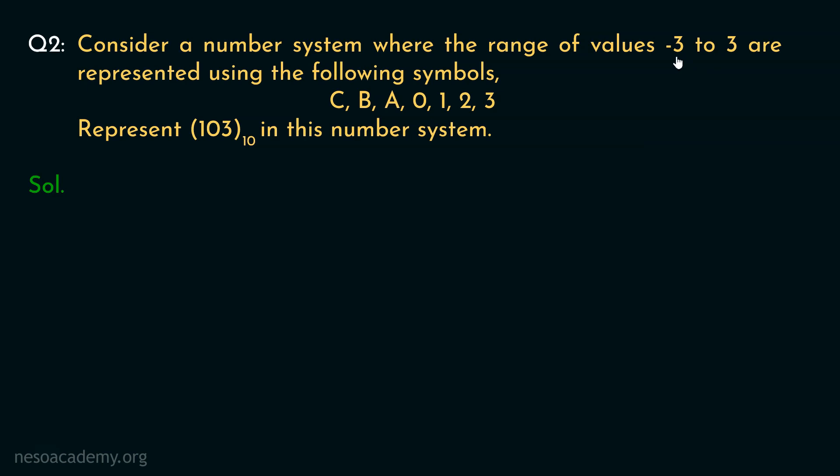Now if we consider the range of minus 3 to 3, the actual values are minus 3, minus 2, minus 1, 0, 1, 2 and 3. And these values are represented by these symbols. So minus 3 signifies the symbol c, minus 2 signifies the symbol b, and minus 1 is a. And the rest is the same. So in other words, in this number system the value of c is minus 3, the value of b is minus 2, and the value of a is minus 1. Now, this number system has 1, 2, 3 plus 4, that is 7 symbols. So the base of it is clearly 7.